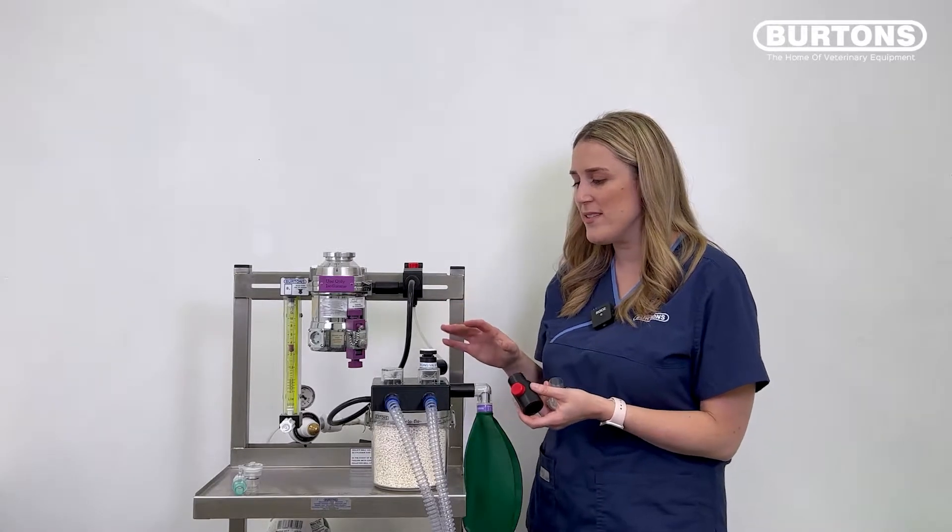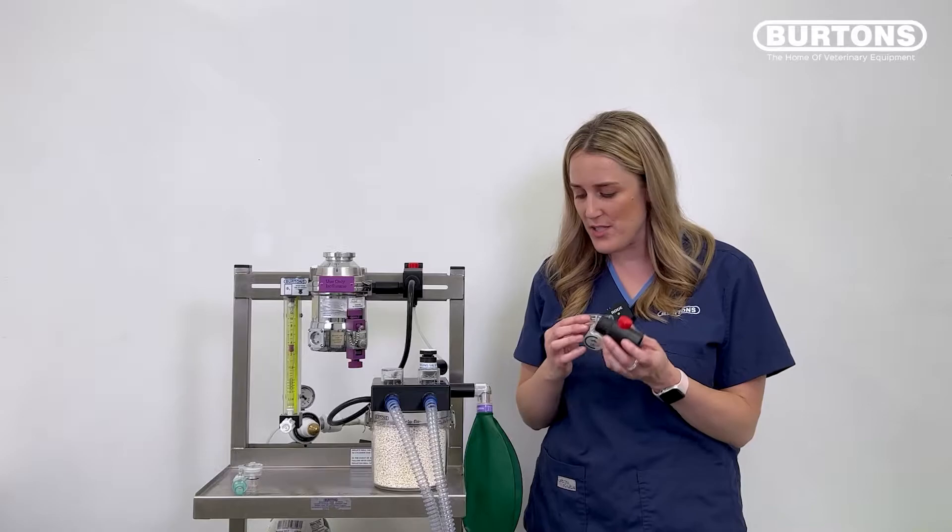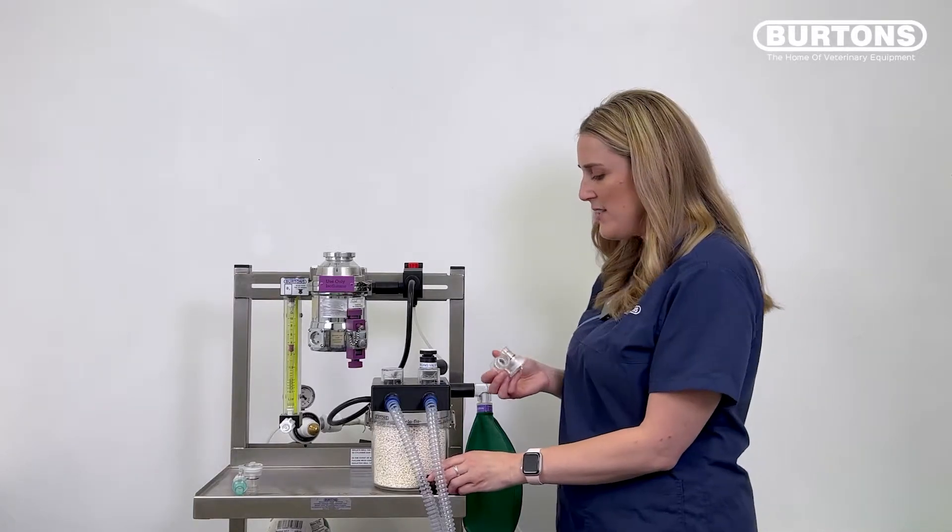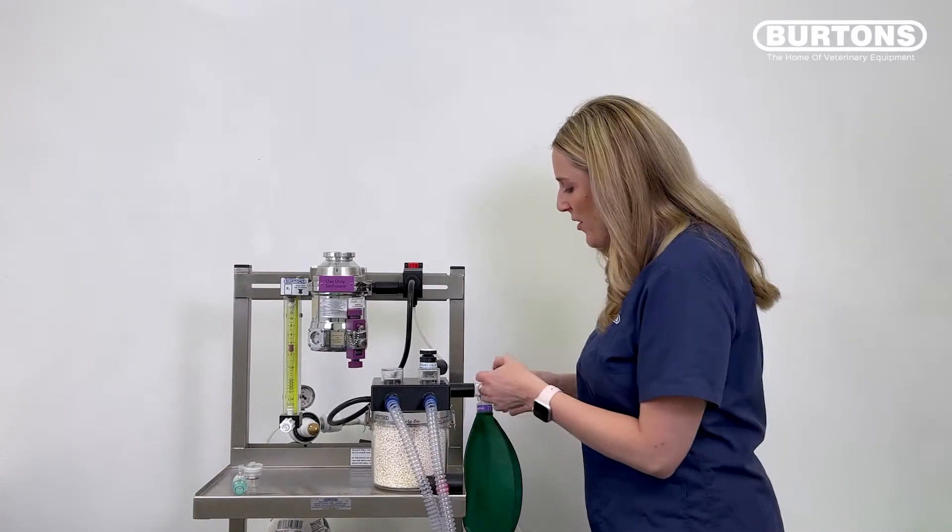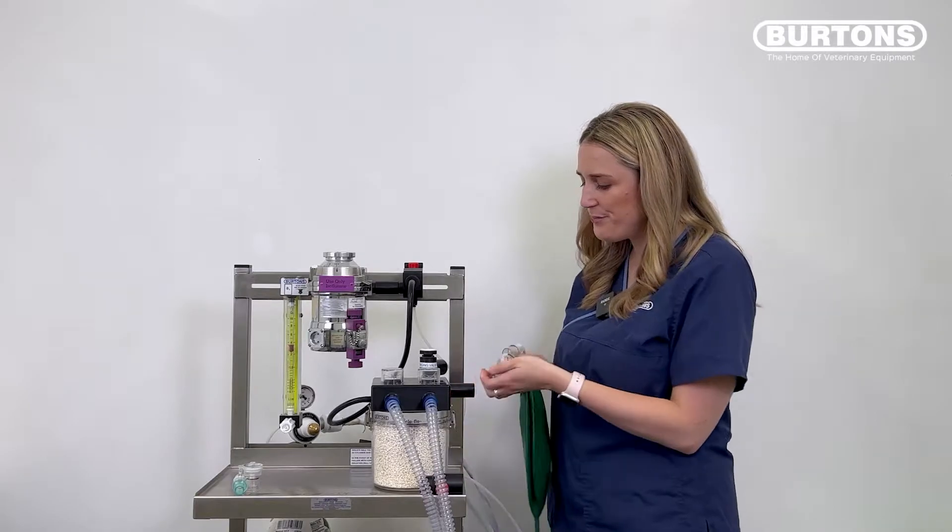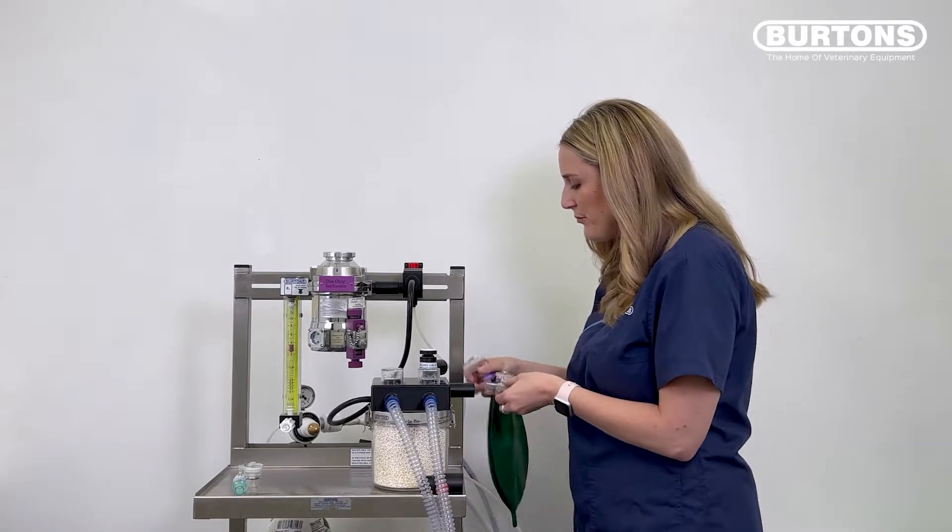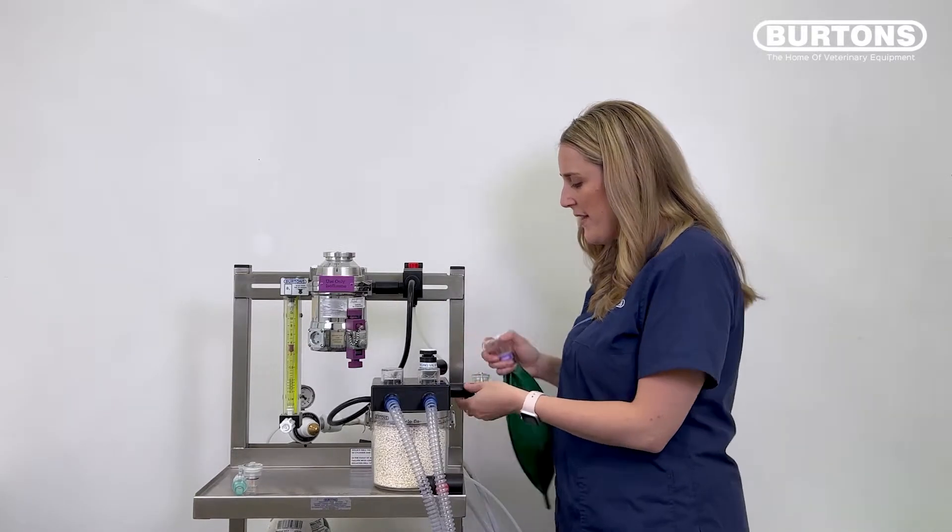So what I have here is a circle breathing system and I'm just going to go and attach our accessories. First of all I have the in-circuit manometer. I'm just going to take off the reservoir bag and attach the manometer and then attach the bag back on.